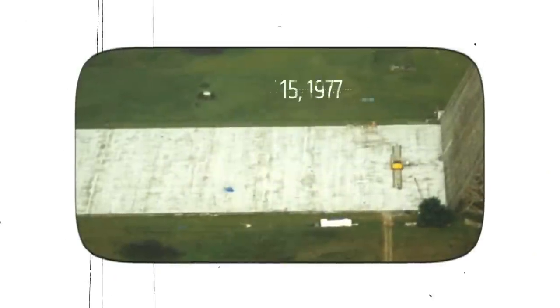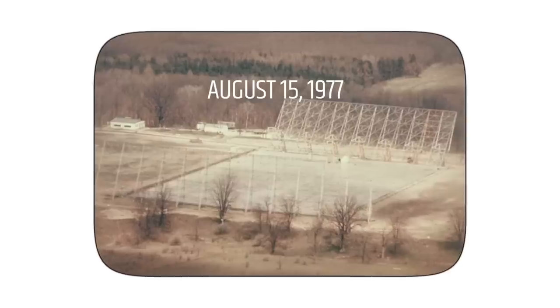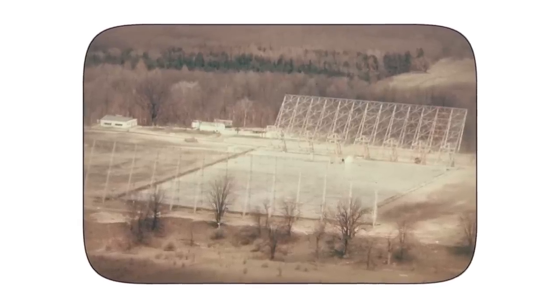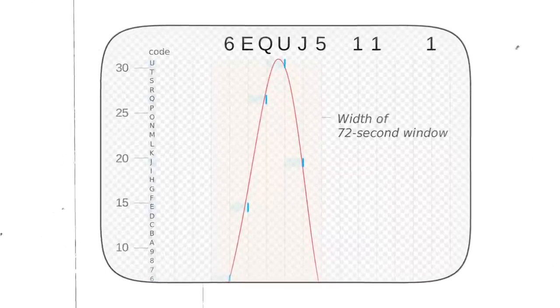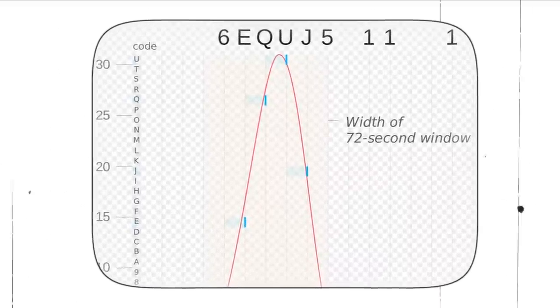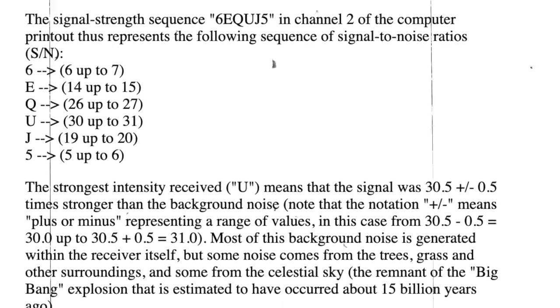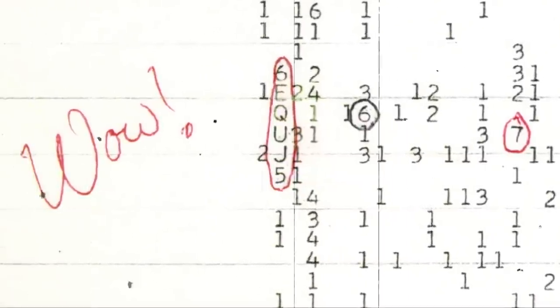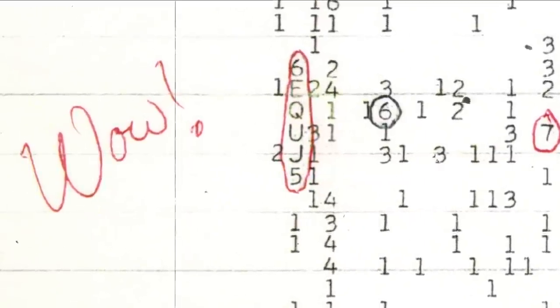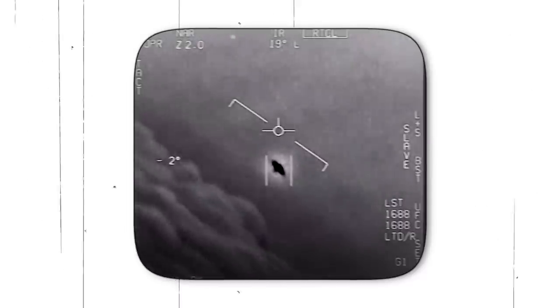On August 15, 1977, the Big Ear radio telescope in Delaware, Ohio, received the most powerful signal it would ever detect during its decades of observations. The signal lasted just 72 seconds, but when an astronomer spotted it on a computer printout days later, he was so impressed that he quickly scrawled WOW in red pen across the page. The data looked much like what SETI astronomers expected to see from an alien intelligence.